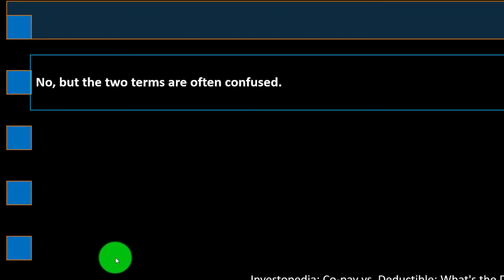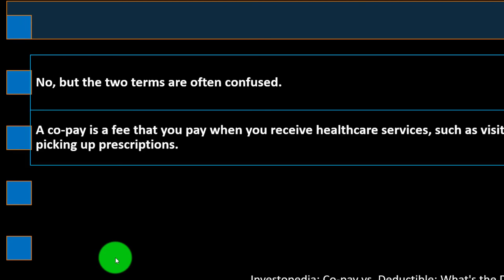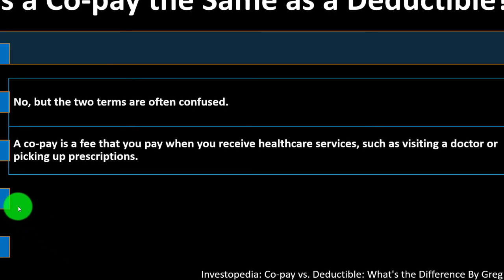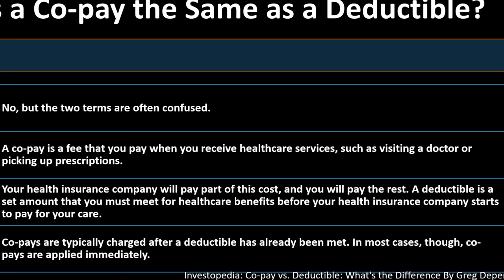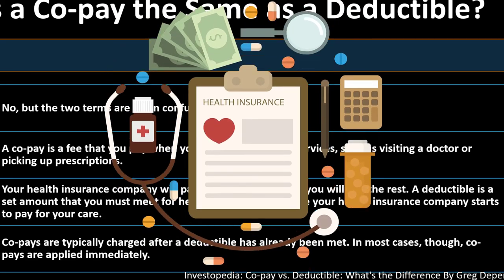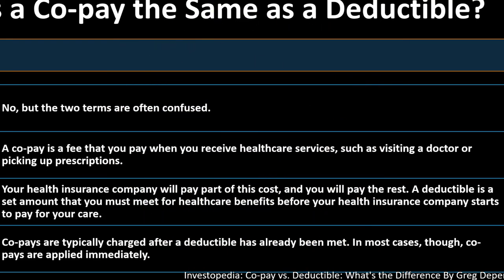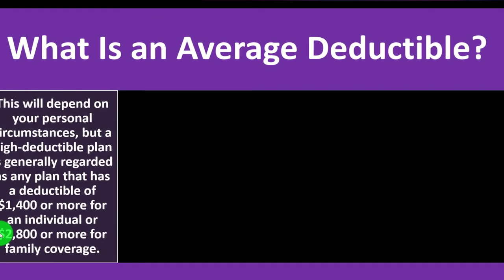Is a co-pay the same as a deductible? No, but the two terms are often confused. A co-pay is a fee that you pay when you receive healthcare services, such as visiting a doctor or picking up prescriptions. Your health insurance company pays part of this cost and you pay the rest. A deductible is a set amount you must meet before your health insurance company starts to pay for your care. Co-pays are typically charged after a deductible has already been met, though in most cases co-pays are applied immediately.